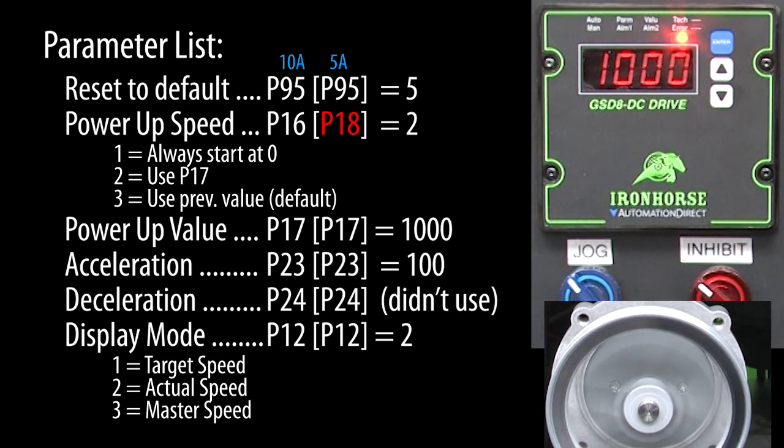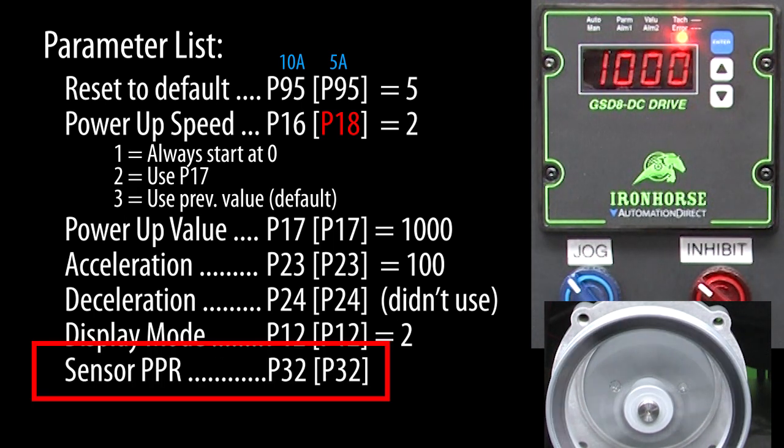What if instead of an encoder you have some other pickup sensor generating the feedback pulses coming back into the drive? Maybe you have a flow meter that sends out pulses representing gallons per minute or a gear tooth sensor counting the number of teeth passing by. You can use any sensor you want as long as it is generating a digital waveform between 0 and 5 to 24 volts DC. Just enter that sensor's PPR in parameter 32.